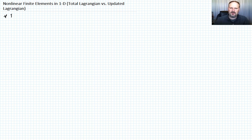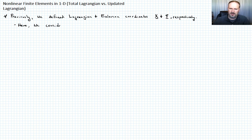Previously we defined Lagrangian and Eulerian coordinates. We called them capital X for the Lagrangian and C for the Eulerian, respectively. Here we're going to consider a Lagrangian mesh.